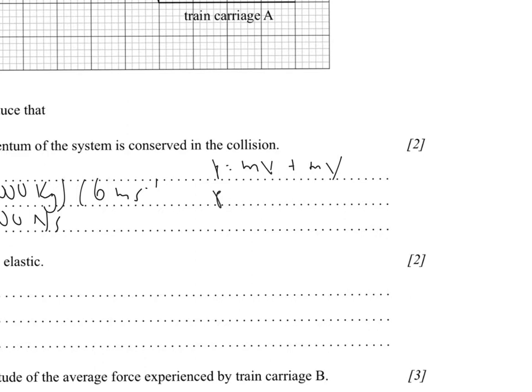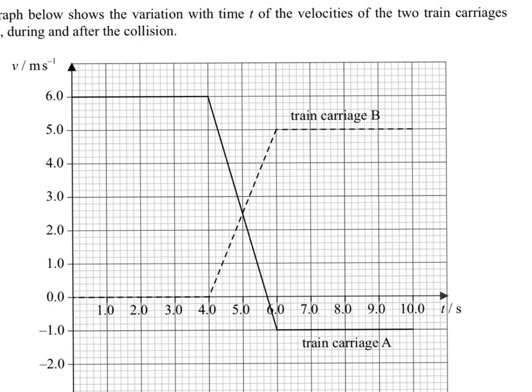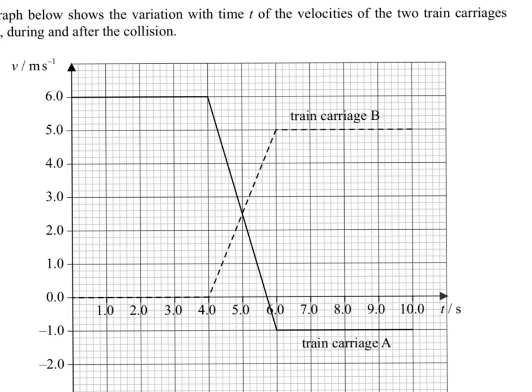So, you have momentum is equal to the final mass and the final velocity of carriage B, which is a mass of 7,000 kg times a final velocity of 5 meters per second, which is evident on the graph right here. 5 meters per second for carriage B.